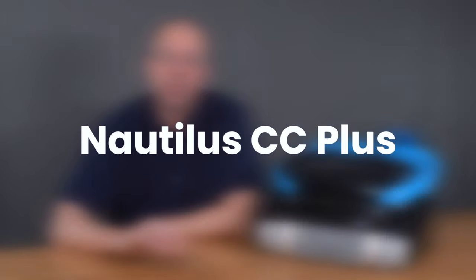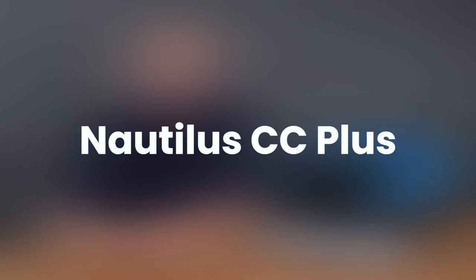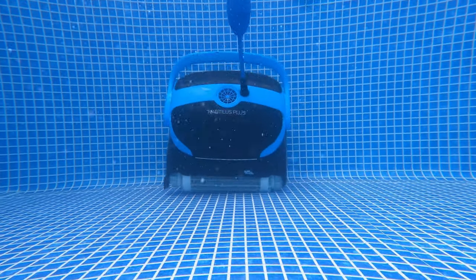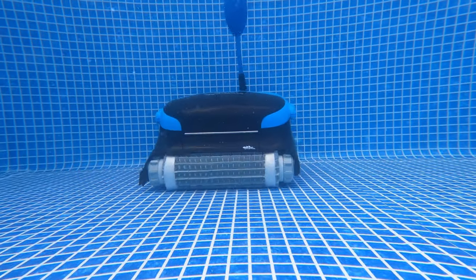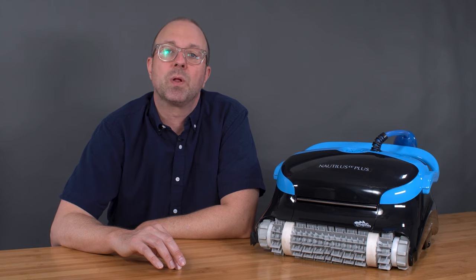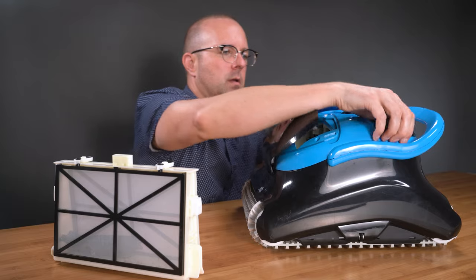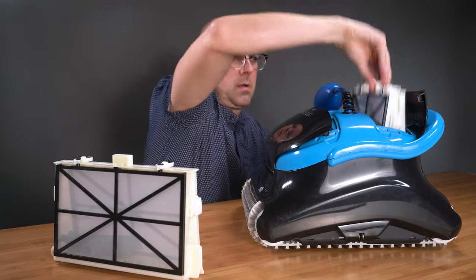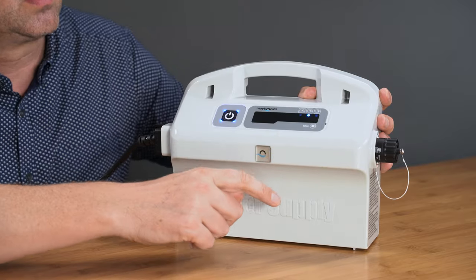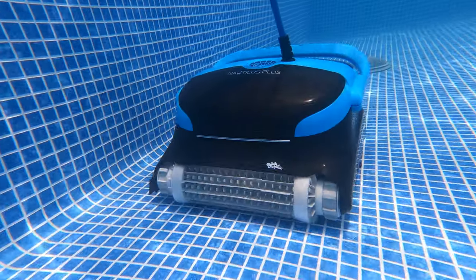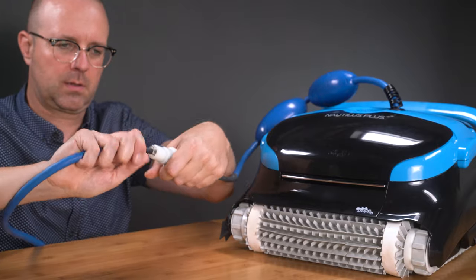Following the Quantum is the Dolphin Nautilus CC Plus. The Nautilus CC Plus can cover the floors and walls of pools up to 40 feet in length, but it will not clean your waterline. This robot includes the standard fine filter cartridges, a programmable power supply, a two-hour cleaning cycle, anti-tangle swivel, and a two-and-a-half-year warranty.